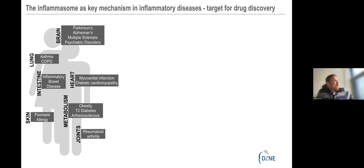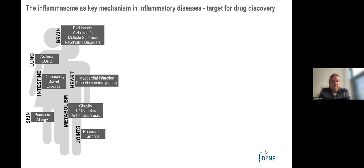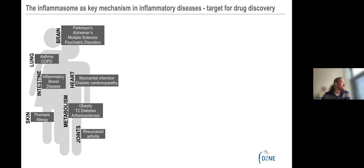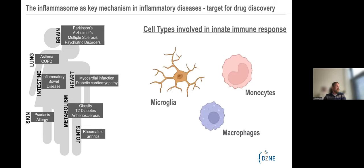Our target, or what it's all about: the inflammasome is a key mechanism in inflammatory diseases. The inflammasome responds to a wide range of infectious and endogenous ligands and is implicated in many different auto-inflammatory diseases including arthritis, gout, diabetes, obesity, and in our case, where we focus on dementia — meaning Alzheimer's disease, Parkinson's disease, and so on.